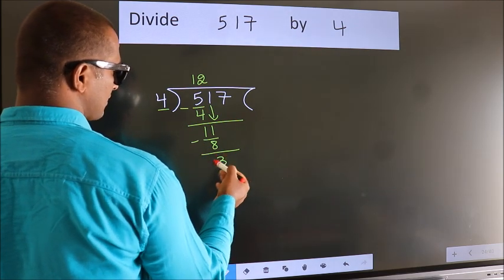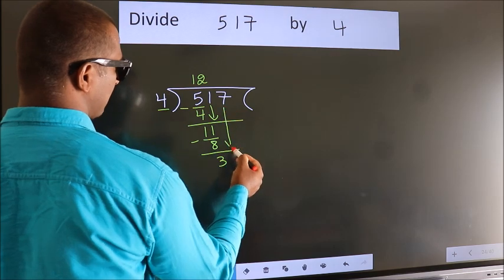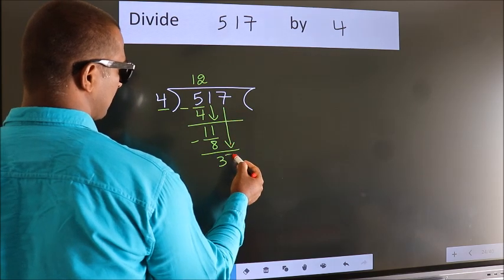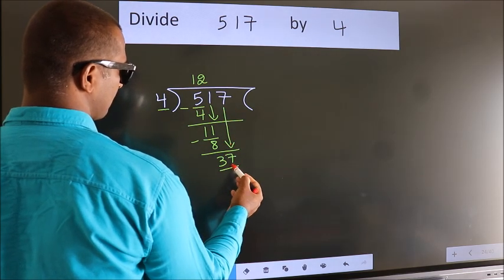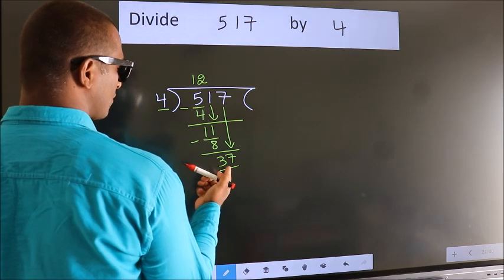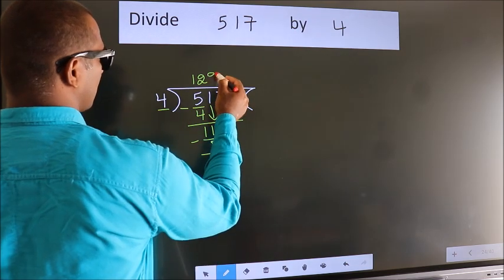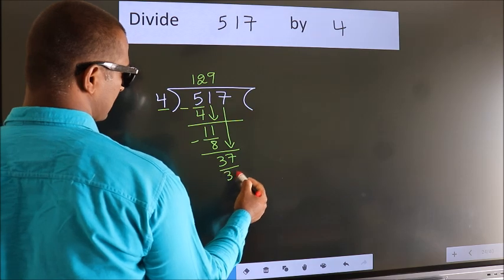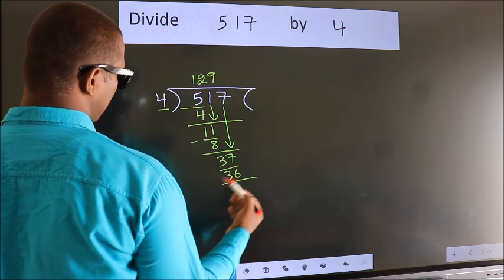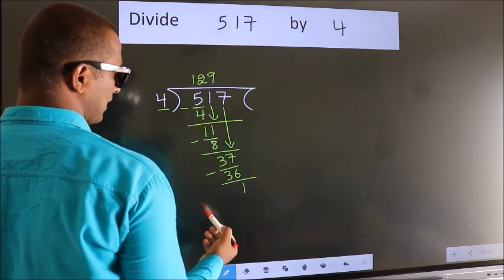After this, bring down the beside number. So, 7 down. So, 37. A number close to 37 in 4 table is 4 nines 36. Now, we subtract. We get 1.